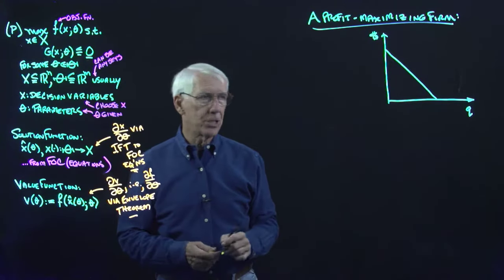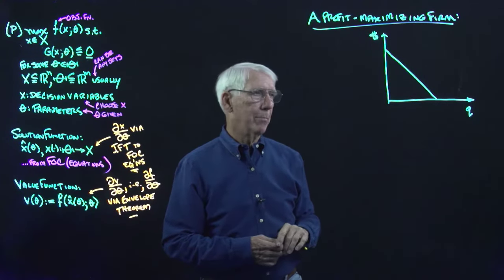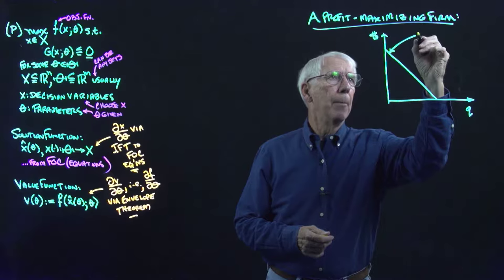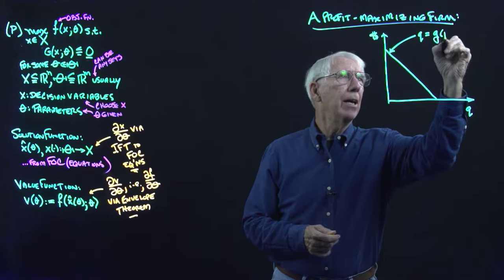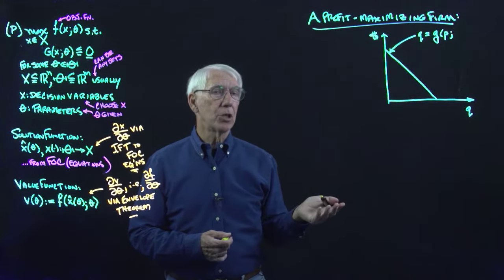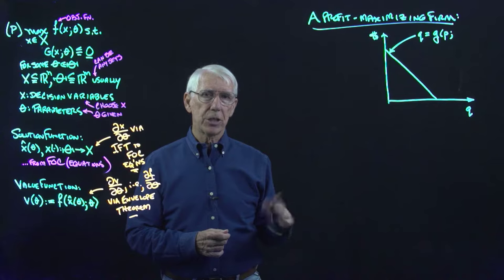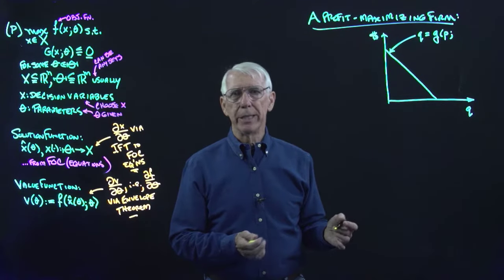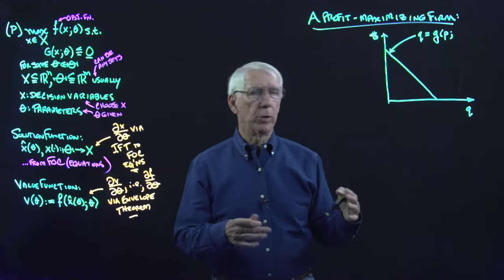There's nothing in what we're doing that requires it to be a straight line; it's just a little more convenient when we look at profit maximization, marginal revenue, and so on, but it's not required. So the quantity that the firm can sell is some function g of the price that it charges and some parameters. The price that the firm charges is something it can choose — a decision variable — and the parameters are things outside the firm's control. Let's take a couple of possible parameters — there could be lots of them — for example, disposable income in the local market where the firm operates.